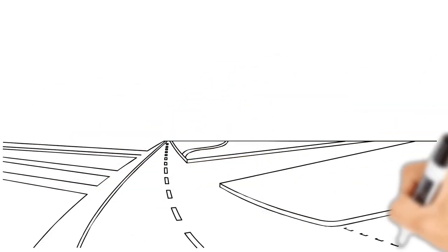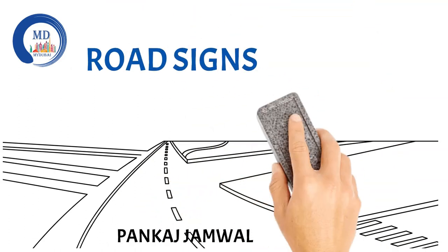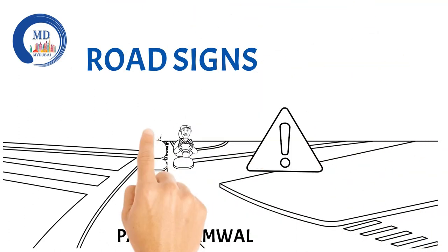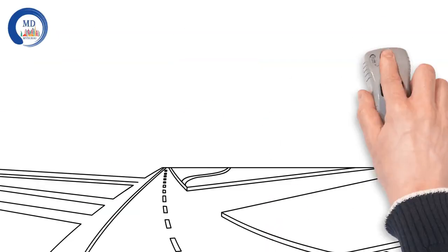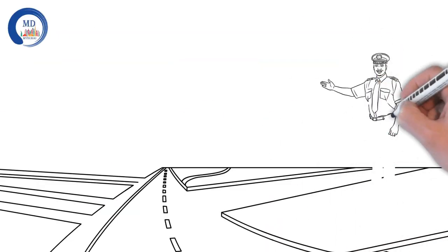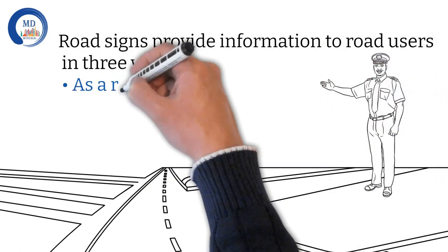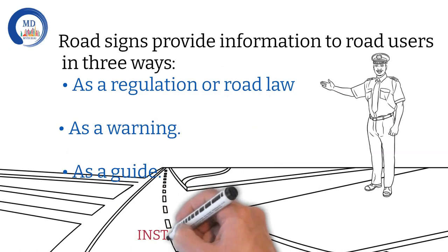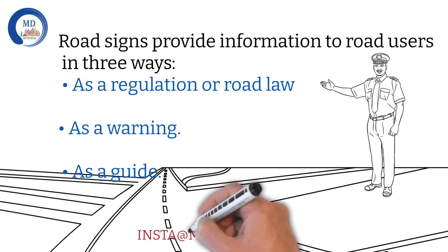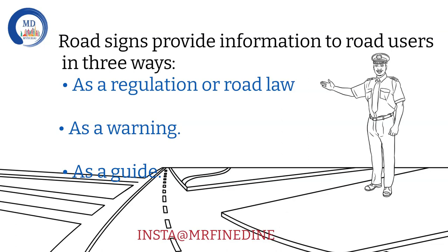Hi friends, my name is Pankaj and I welcome you all to my YouTube channel. In today's video we are going to discuss road signs, the different categories and what these signs really mean. Road signs can be divided into three different categories: the first one is regulatory signs, also known as road law signs, which are the most important. The second is warning signs, and the last one is guide signs.